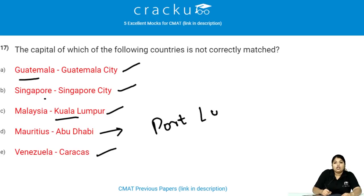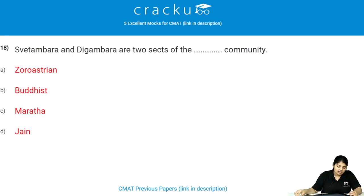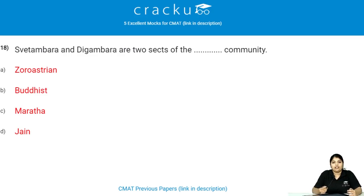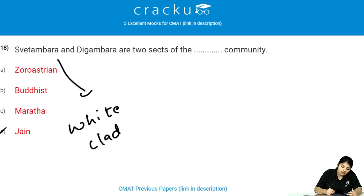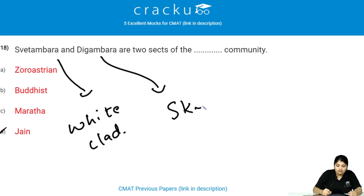Swetambara and Digambara are the two sects of which community? These are the two sects of the Jain community. Swetambara means 'white clad' and Digambara means 'sky clad'.